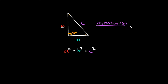C is your hypotenuse. The hypotenuse of a triangle is just a fancy way of saying it's the longest side of the triangle. In this case, this would be the hypotenuse, and the way you can always tell which side is the hypotenuse is because it's always going to be opposite of this right angle right here.